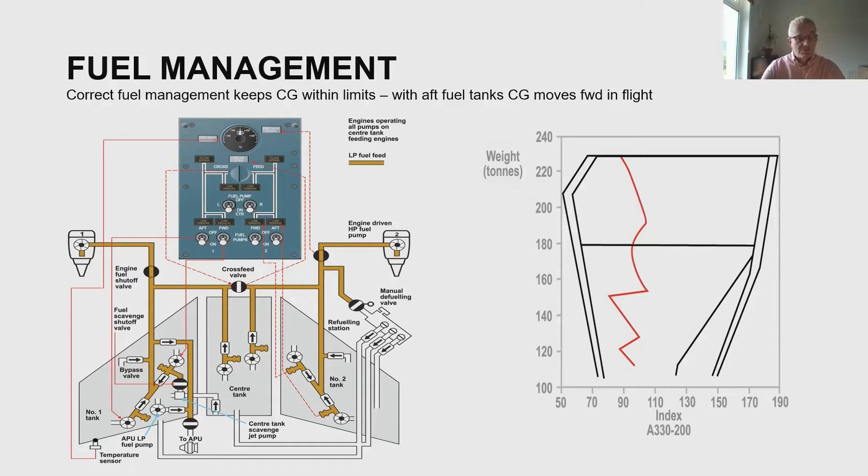This is known as a trim tank. It could be in the fin or more commonly in the horizontal stabilizer, and some of these are very big indeed. The 747 has a trim tank which is very large, seldom used though.